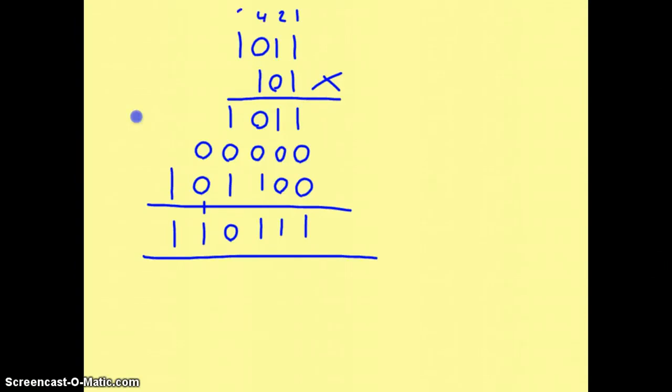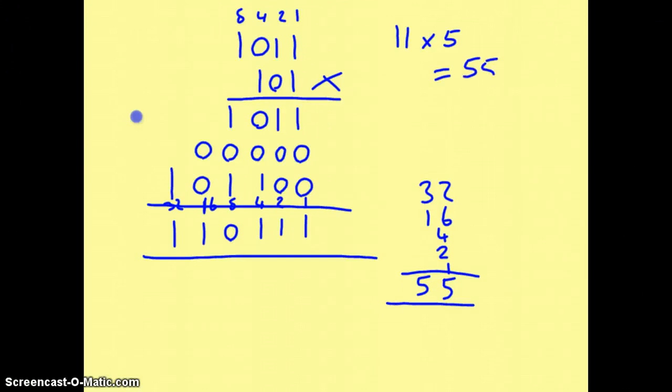We can check this answer. So we've got there, 11 multiplied by 5, and we can calculate the answer here. 8, 16, 32. So we've got 32 plus 16 plus 4 plus 2 plus 1. So we've got 55, 11 times 5 equals 55. We know we've got the correct answer. And that is how you do multiplication in binary.